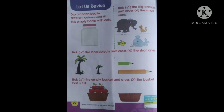Look at the picture. Tick the big animal and cross the small animal. Tick the elephant and cross the cat. Next, cross the small fish and tick the dolphin.